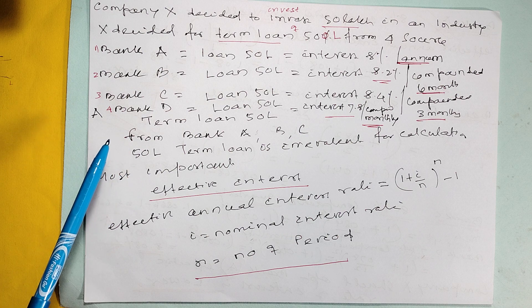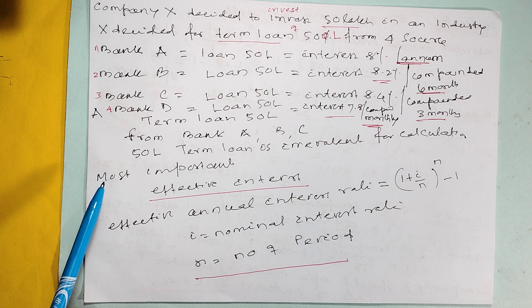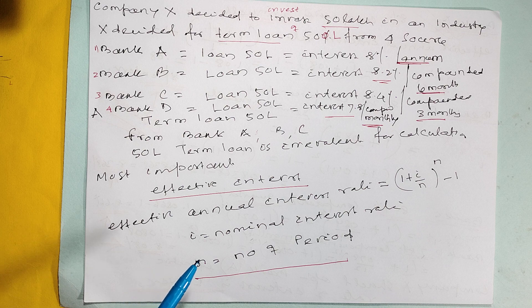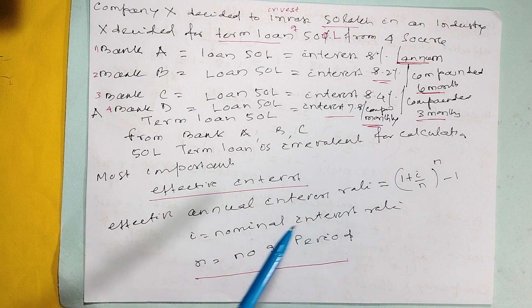Here you have to think what is the most effective rate of interest because this is a nominal rate of interest. You have to find what the effective rate of interest is. There is a general formula for this where i is the nominal interest and n is the number of periods.